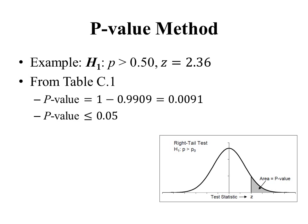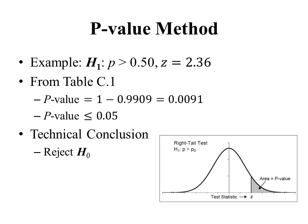To come to our technical conclusion, we compare the p-value to our significance level alpha, which is 0.05. In this case, the p-value of 0.0091 is less than alpha, so the technical conclusion is to reject the null hypothesis. That's the exact same technical conclusion we reached using critical regions, and we would then come to the same final conclusion. The p-value method is simply an alternative way of coming to the technical conclusion — in either method, we should reach the exact same technical and final conclusions.